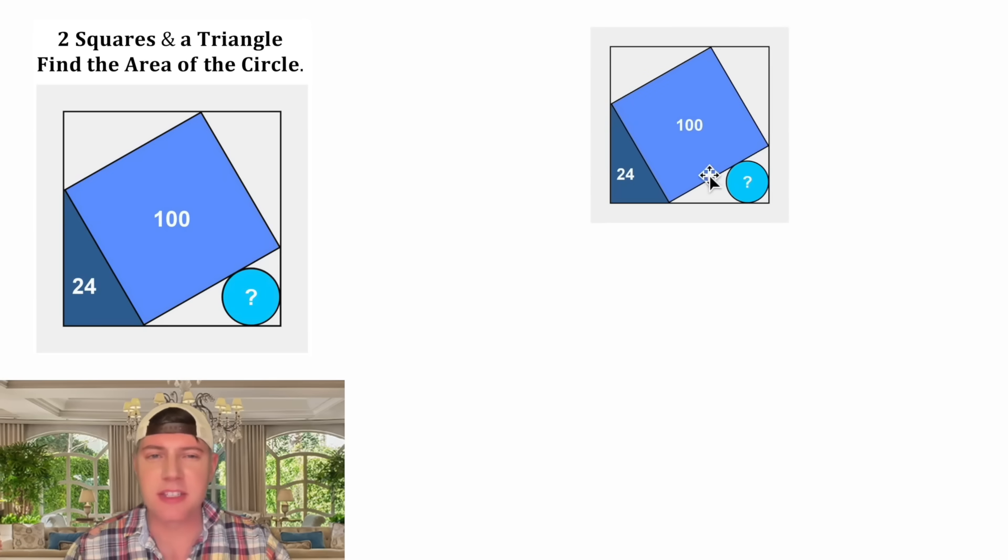First, in this square since the area is 100, each side of the square will be equal to 10. And then this triangle here is the same thing as this triangle, same thing as this triangle, and same thing as this triangle. All of these triangles will be the same.